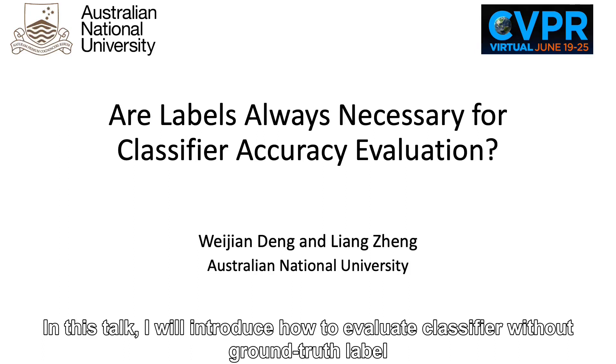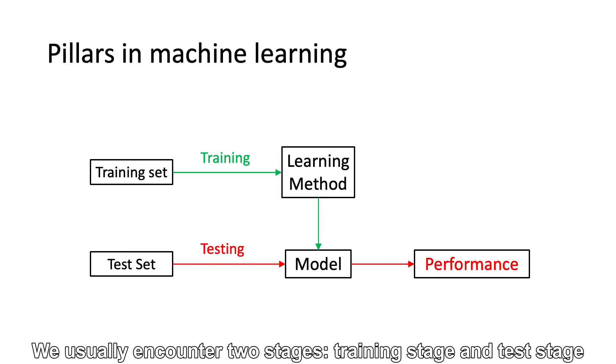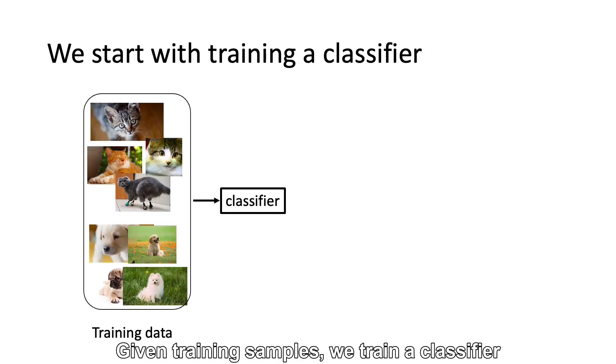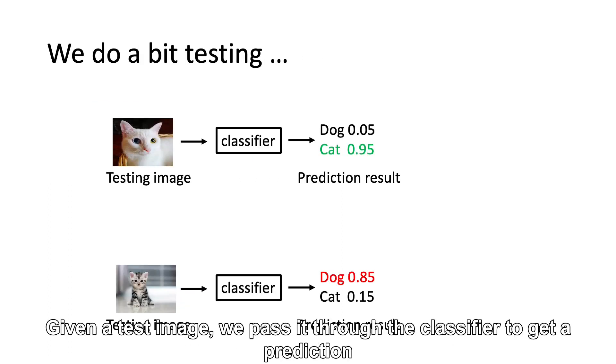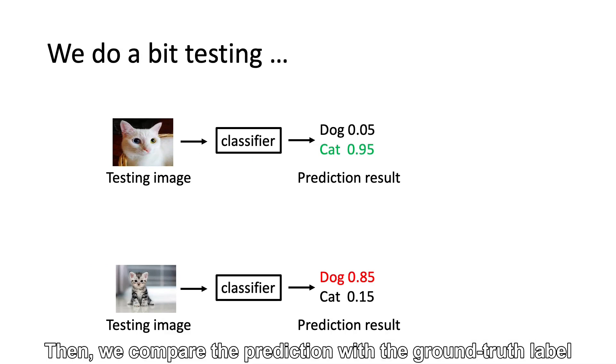In this talk, I will introduce how to evaluate classifiers without ground truth labels. We usually encounter two stages: training stage and test stage. Given training samples, we train our classifier, then we evaluate its performance. Given a test image, we pass it through the classifier to get a prediction.